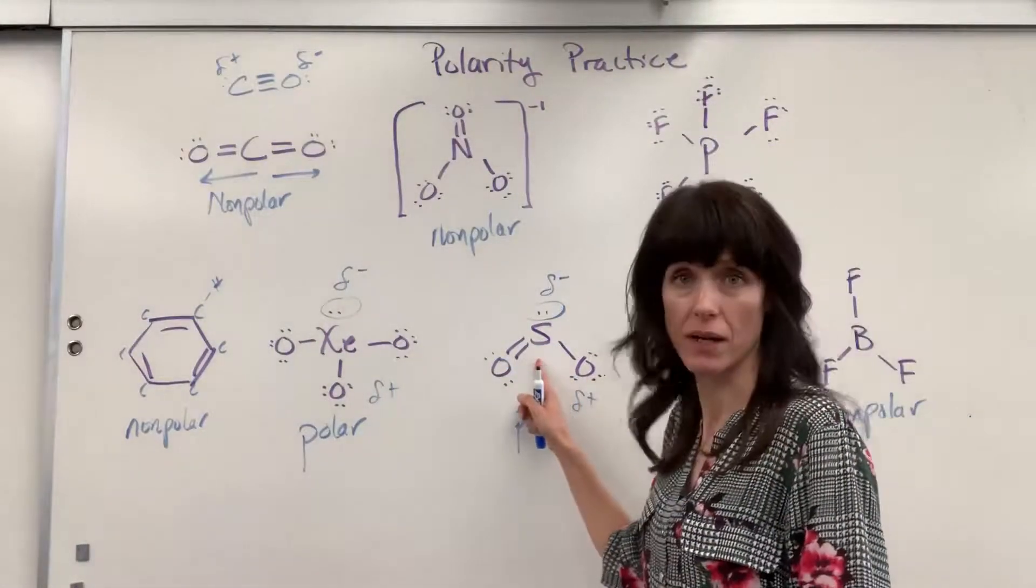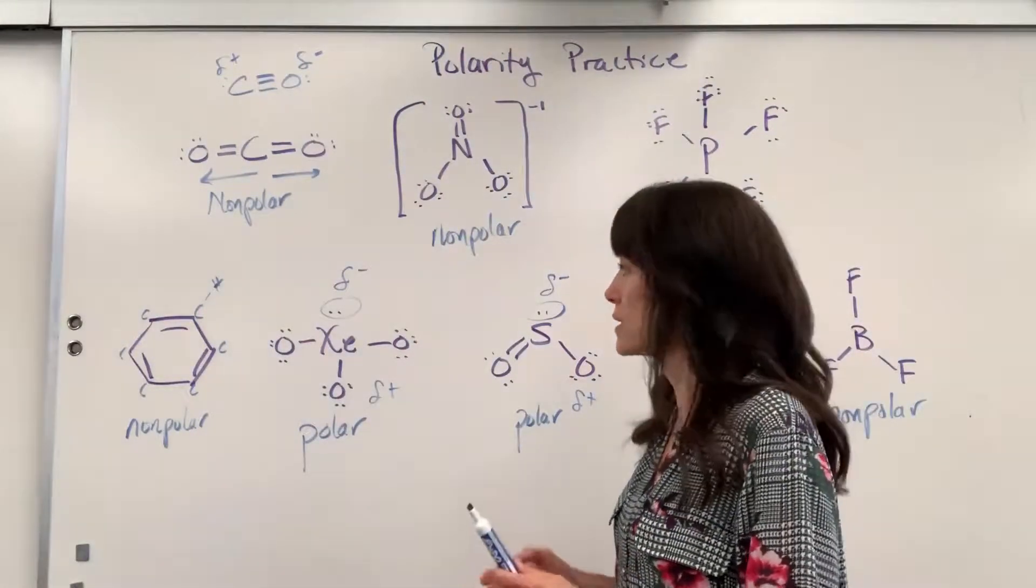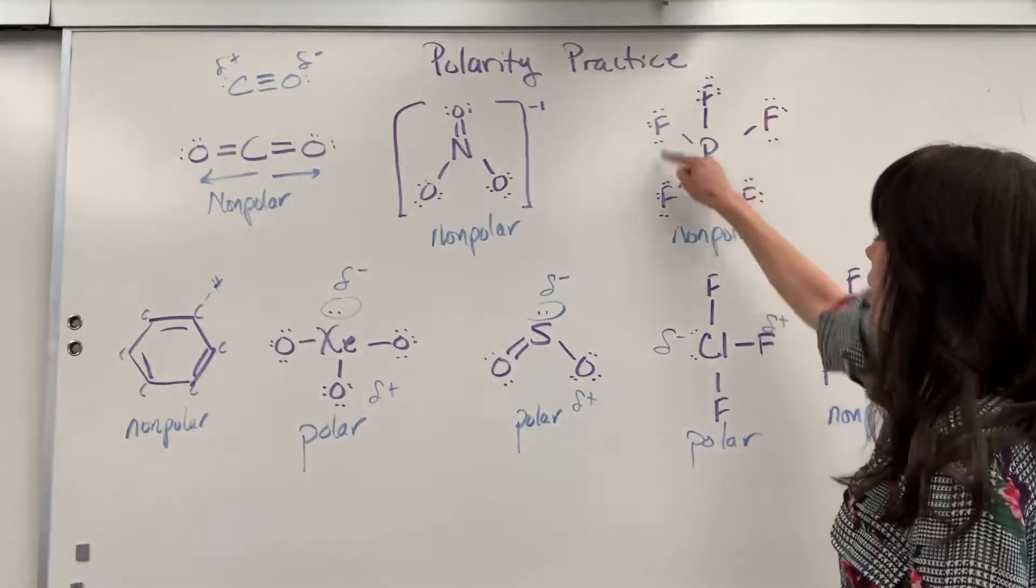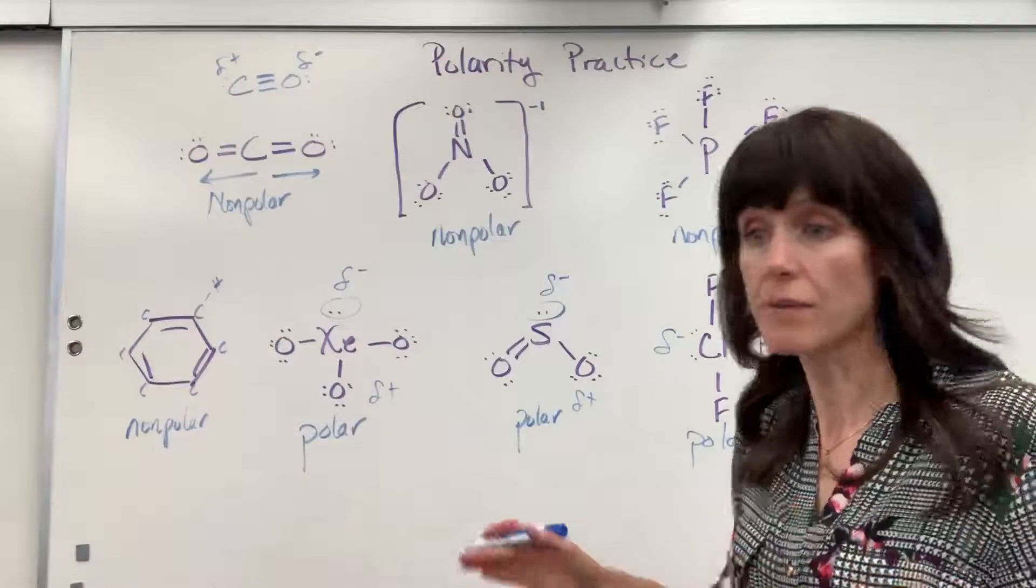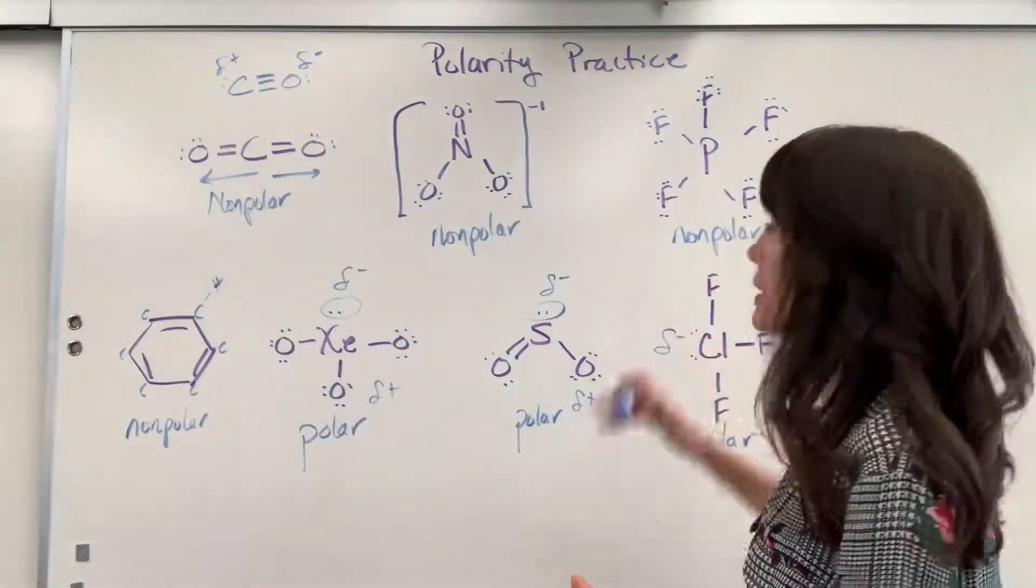Otherwise, if you see a lone pair or lone pairs on the central atom, it's polar. Last thing that you look at is symmetry. Do you have all the same atoms around that central atom? The central atom has no lone pairs. Then, automatically, it doesn't matter if the bond's polar or non-polar, automatically, it will be non-polar.